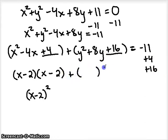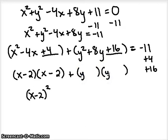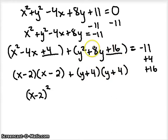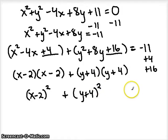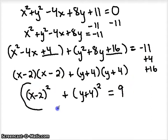Rewrite the Y terms as a square of a binomial: square root of Y squared is Y, square root of 16 is 4, using the positive middle sign — so Y plus 4 squared. You can always check by FOILing back out. On the right side, 4 plus 16 is 20, and combined with negative 11 gives 9. So we arrive at X minus 2 squared plus Y plus 4 squared equals 9 — the equation in standard form.